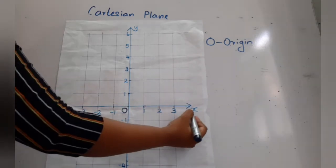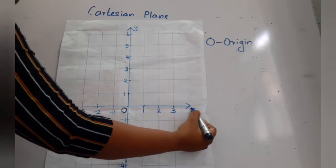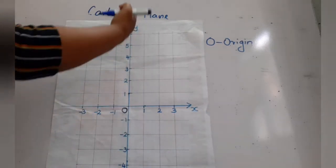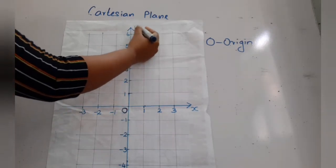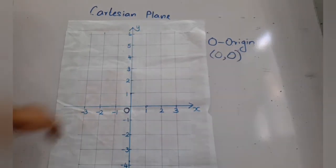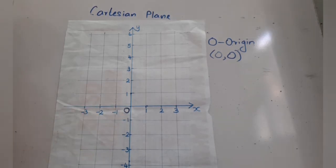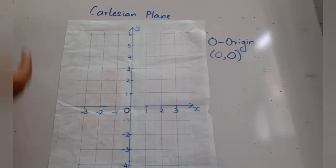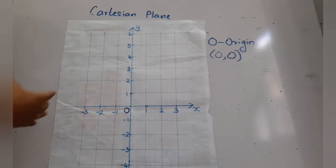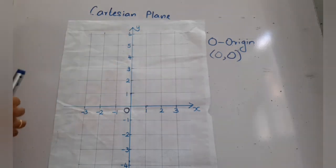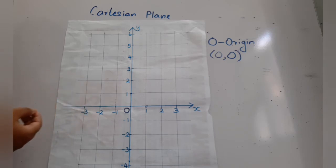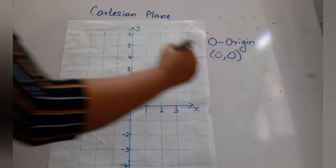The horizontal number line is known as the x-axis and the vertical one is the y-axis. Based on the origin point we mark locations, and since we have two number lines, a point is denoted with two numbers. These two numbers are known as the coordinates of the point.